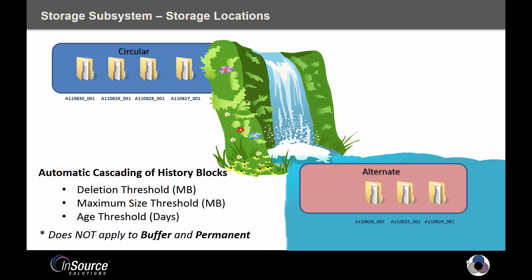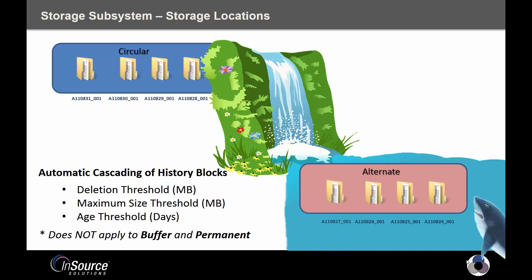If you have an alternate directory defined, any one of these mechanisms that would have caused your history block to be deleted will instead cascade it into the alternate directory, so it's not deleted while it's there. However, the alternate directory can also have a deletion threshold — for example, if only a gigabyte of hard drive space remains, it will start deleting old data with nothing for it to cascade into. It's recommended that the alternate directory be on a different drive than your circular drive, and that you have ample hard drive space and good backup practices.